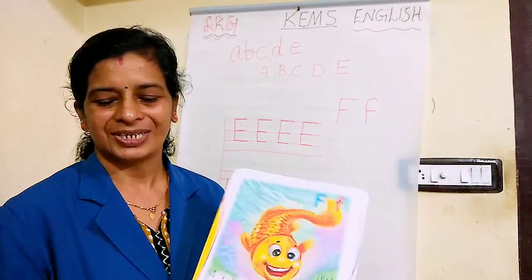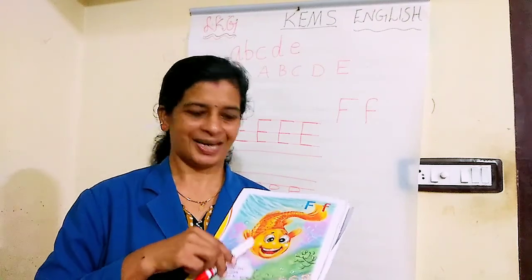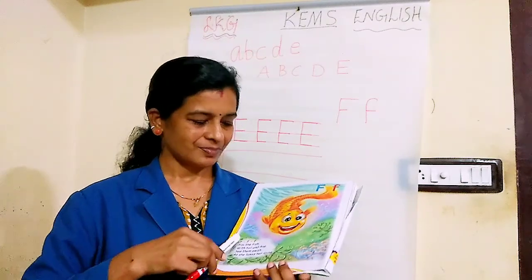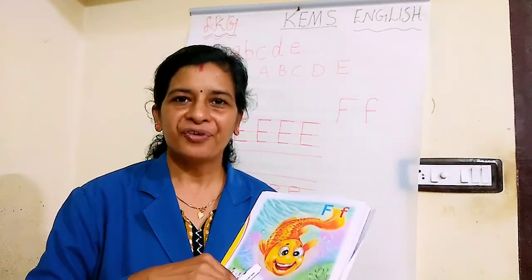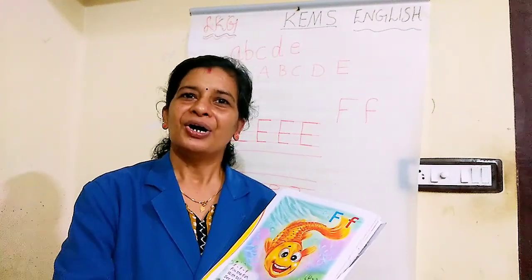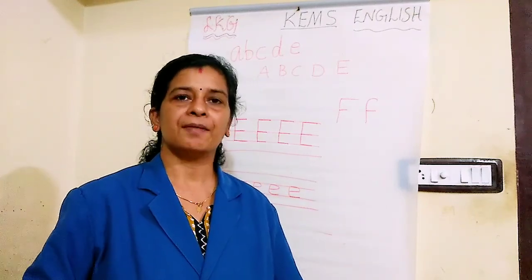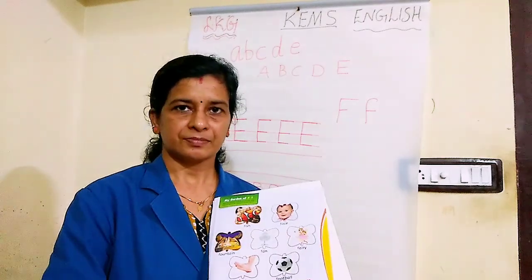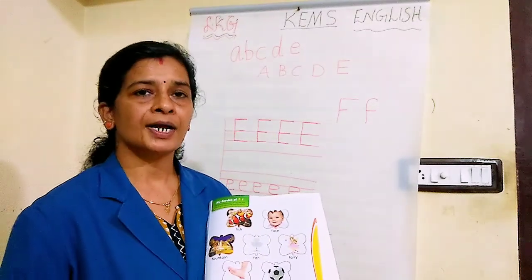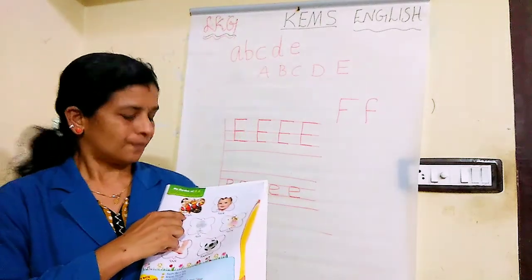Look, my dear children. What is this? Yeah, this is a fish — beautiful fish. The sound of F. F. F. Sound of F. Page number 17. In my garden of F. F for fish.